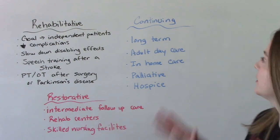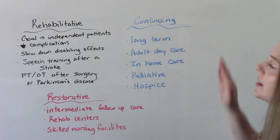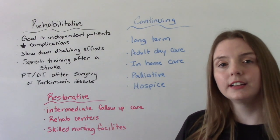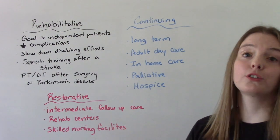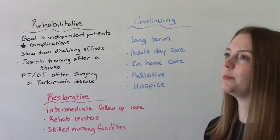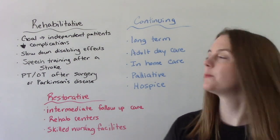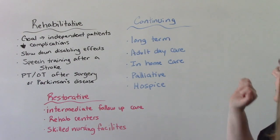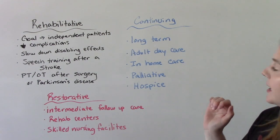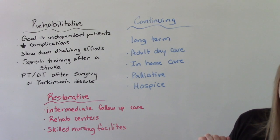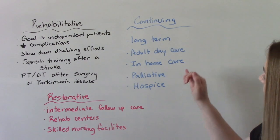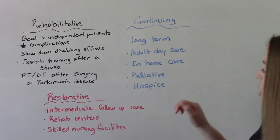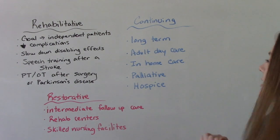Other types of care include continuing care, which is usually done in a long-term care facility. These are patients who usually have chronic illnesses — maybe like our dementia patients. Some examples include a long-term care facility, an adult daycare, in-home care, and then palliative and hospice care can also be done in a continuing care setting. We'll talk about the difference between those two in just a sec.